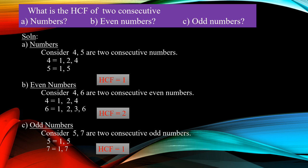Now we are moving to odd numbers. I am taking 5 and 7. Factors of 5: 1, 5. Factors of 7: 1, 7. Which is the common one? Only 1. So we conclude: for consecutive numbers, HCF is 1. For consecutive odd numbers, HCF is again 1. But only for consecutive even numbers, the highest common factor is 2.